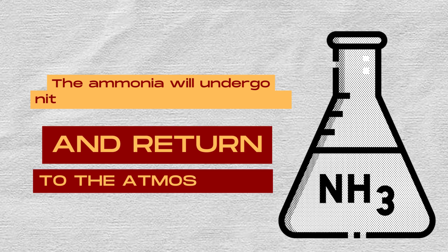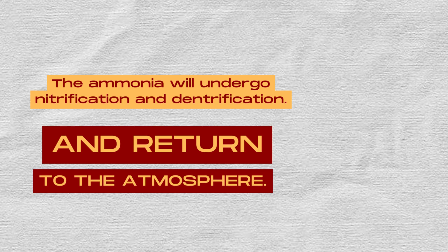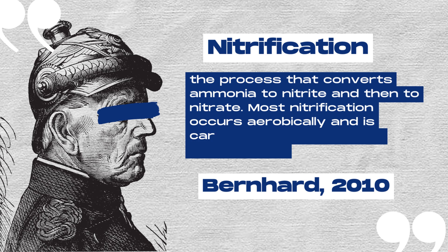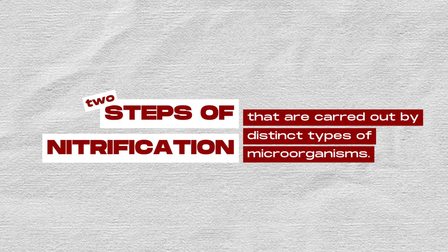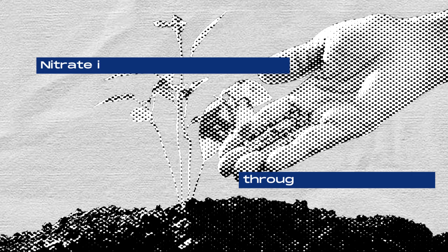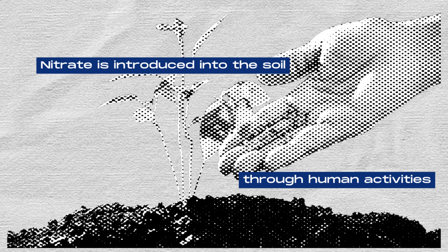The ammonia will then undergo the same process of nitrification and denitrification and return to the atmosphere. Bernard in 2010 defined nitrification as the process that converts ammonia to nitrite and then to nitrate. Most nitrification occurs aerobically and is carried out exclusively by prokaryotes. There are two distinct steps of nitrification carried out by distinct types of microorganisms. Additionally, nitrite is introduced into the soil through human activities such as the use of fertilizers, contributing to the nitrogen cycle through the absorption of nitrate present in the fertilizer into the ground.